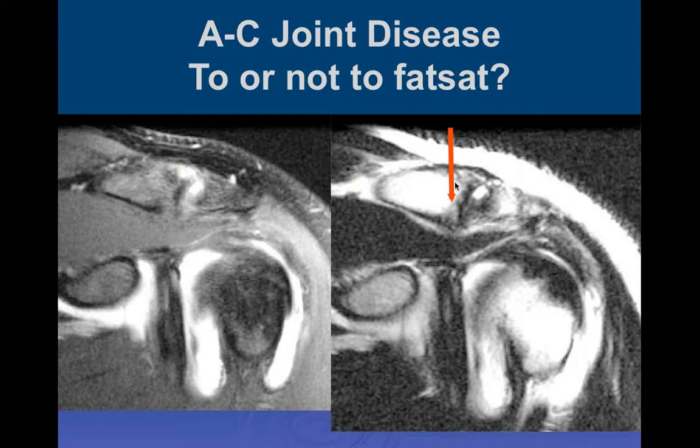One of the reasons I like to have non-fat-suppressed images around the shoulder: maybe not so important in the 20-year-old athlete, but most of the patients we see are older individuals evaluating degenerative joint disease. The vast majority of MRs we do with the shoulder are in older individuals, and you really need the fat contrast to adequately evaluate degenerative disease and osteophytes in this area.